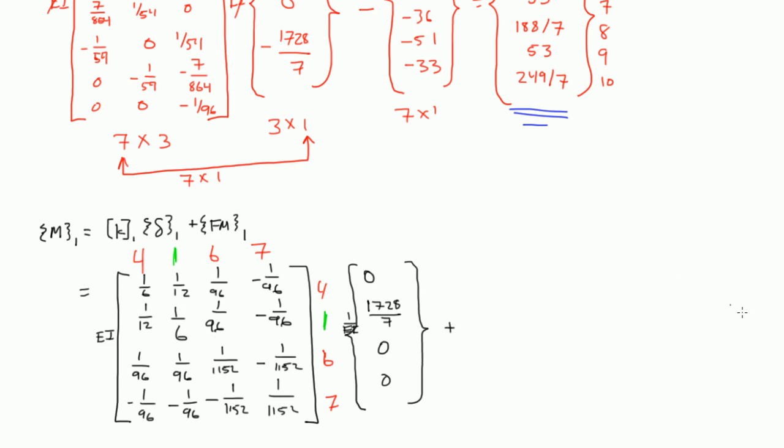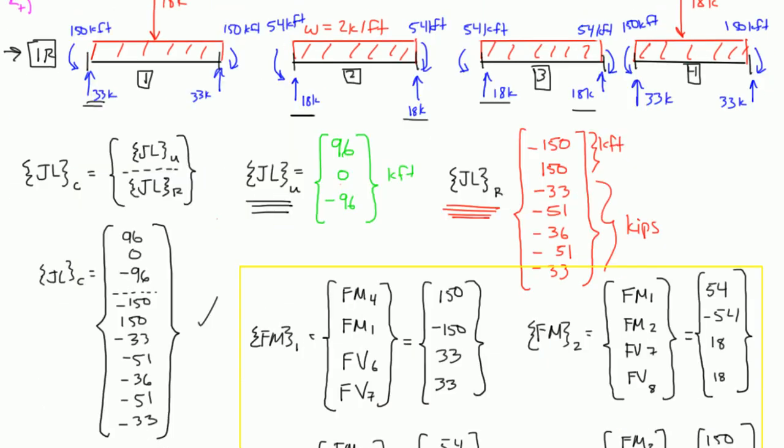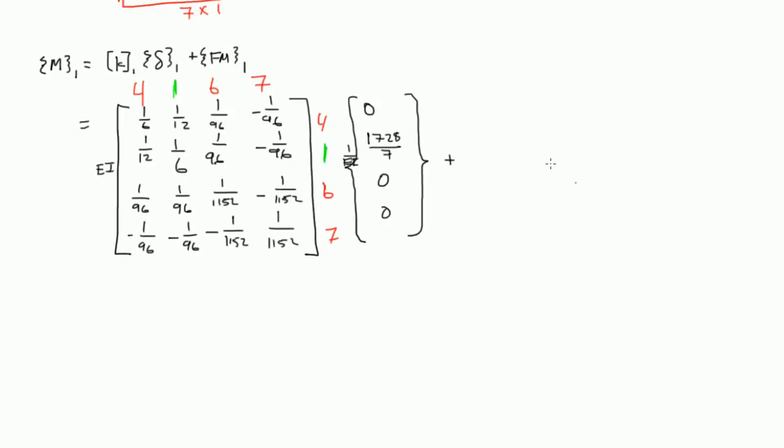1728 over 7. And then EI we can actually just pull out here. 1 over EI. And then K also had an EI pulled out. Notice they both cancel out, right? And then theta 1, so it's 4, 1, 6, 7. They're both restrained reactions, meaning they don't have any deformations, right? They can't move their supports. Those are both zeros. And then finally we add to that our Fm1 matrix.